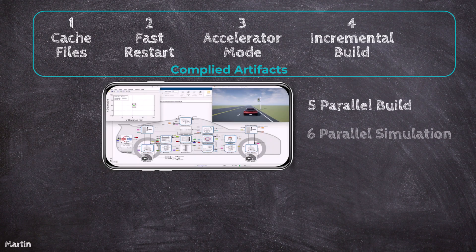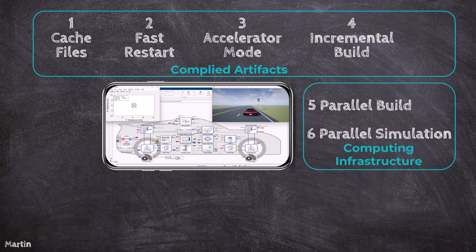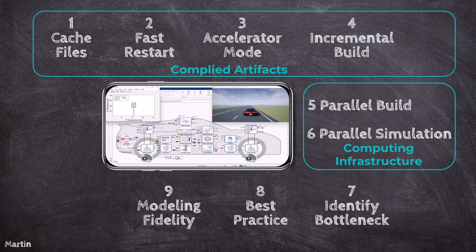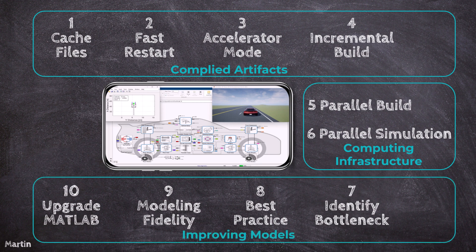Next, we'll demonstrate how to leverage your computing infrastructure with parallel build for model references and parallel simulation using multiple CPU cores. Finally, we'll dive into identifying performance bottlenecks, adopting best practices for Simulink usage, optimizing modeling fidelity, and upgrading MATLAB. These strategies focus on refining your models to achieve superior performance.